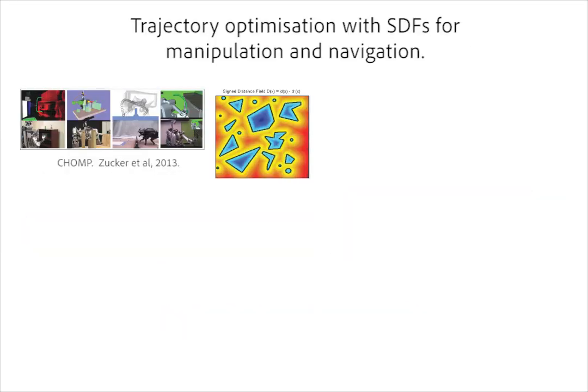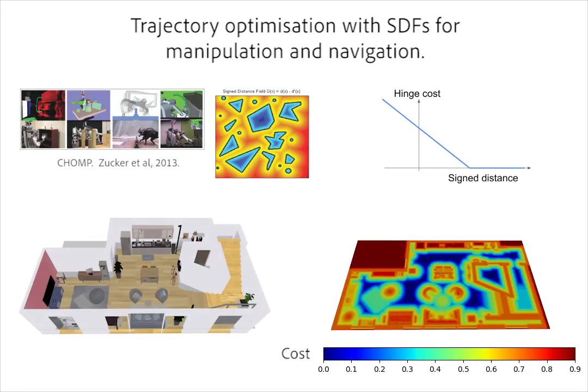Signed distance fields are commonly used in robotics, in particular in motion planning for manipulation and navigation. They are a useful representation as they can easily be transformed into a collision cost field, for example by applying the hinge loss as shown here.